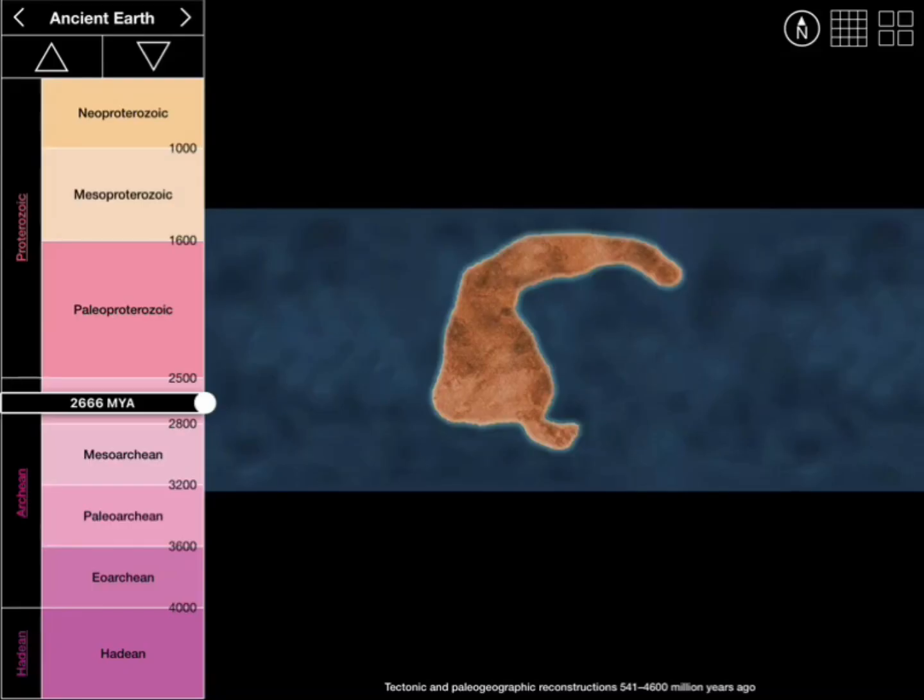This is the first supercontinent Kandala and there were several of them. I don't think I'll go into detail this time, I'll just list their names. There were Kinnarlin, Valbarda, Columbia, Nia, Rhodinia, Panocia, Gunwala, and Pangea.